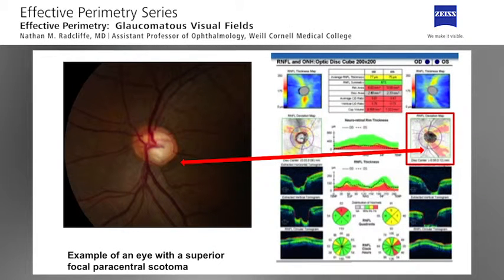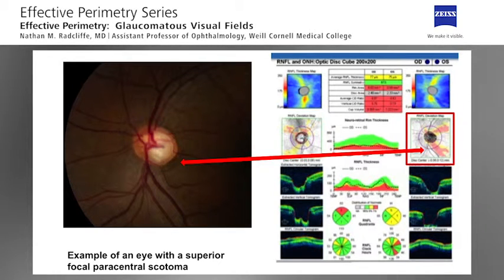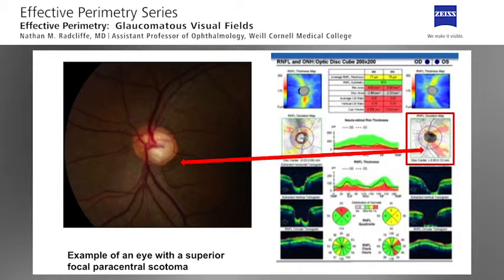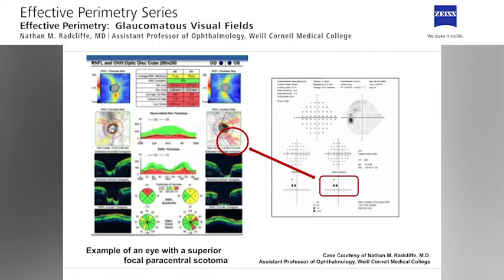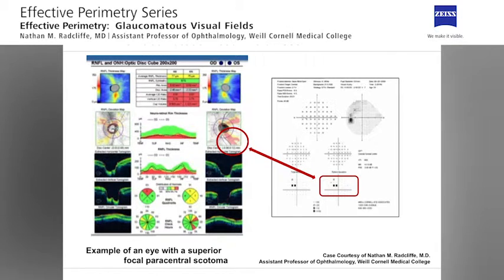Here is an example of a small superior focal paracentral scotoma in a 34-year-old man with primary open-angle glaucoma. An examination of his optic nerve photograph demonstrates a small corresponding inferior neuroretinal rim notch with a thin retinal nerve fiber layer defect. An examination of the Cirrus OCT demonstrates focal and diffuse retinal nerve fiber layer loss with an inferior defect that corresponds to the paracentral scotoma. However, note that there is also a superior retinal nerve fiber layer defect that has not yet made its way onto the visual field test.